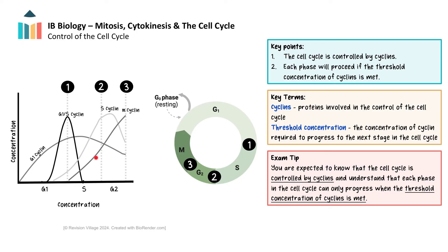By looking at the graph, we can see how the concentrations of cyclins change during interphase, and that different cyclins are involved at different stages. We can see the peak of G1-S cyclins, which must be reached for the cell to progress from G1 to S phase, and then the concentration decreases as the cell enters the next phase. We can see the peak for S cyclins, which allows the cell to move from S phase into G2. Finally, the peak of M cyclin controls the checkpoint between G2 and the beginning of mitosis. In this way, the cell cycle is tightly controlled, ensuring requirements are met before a cell enters mitosis.